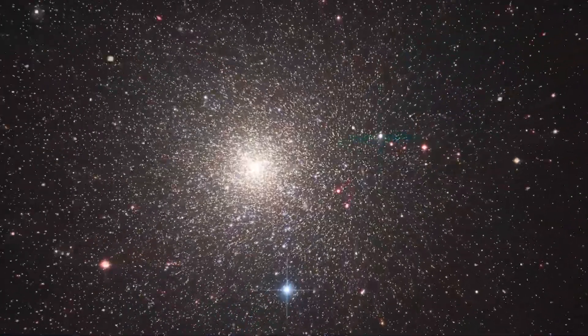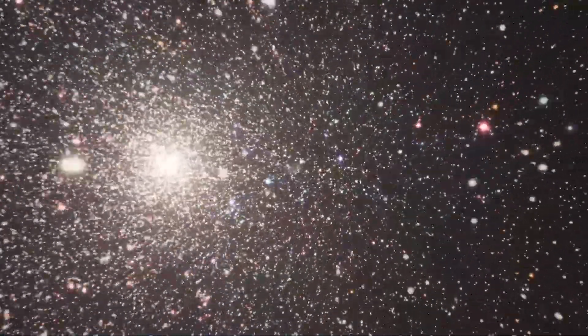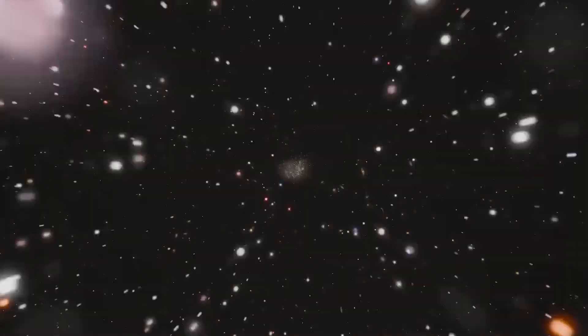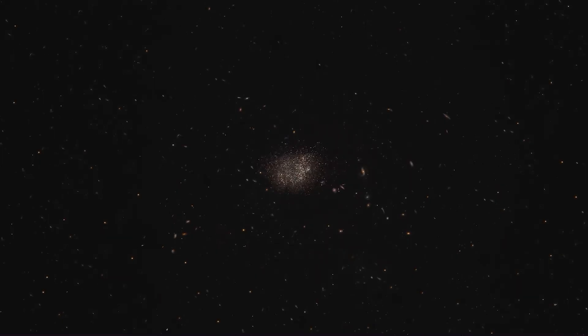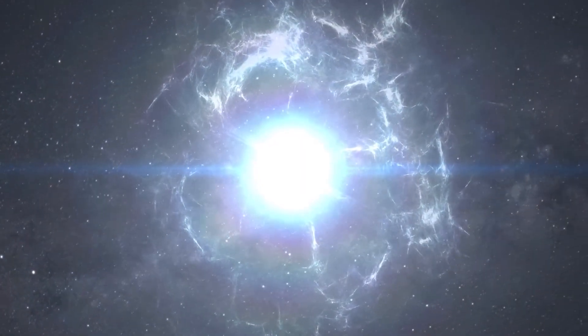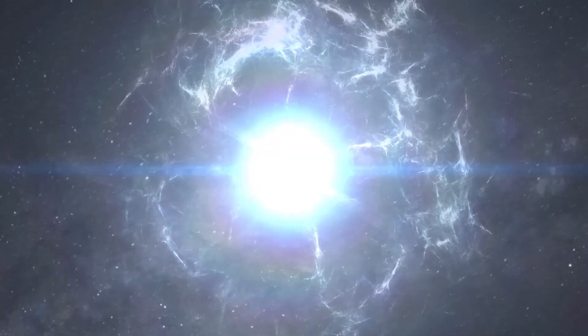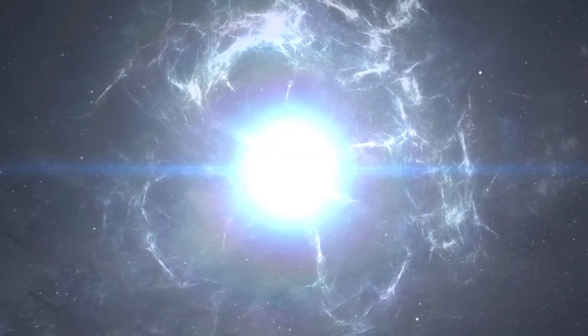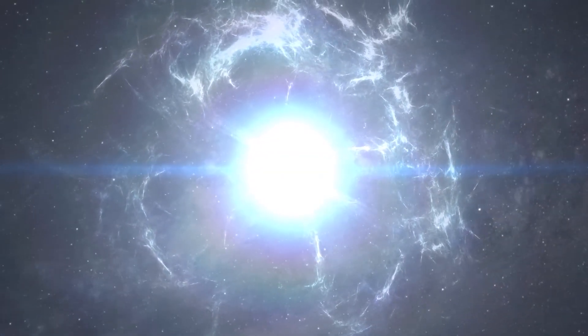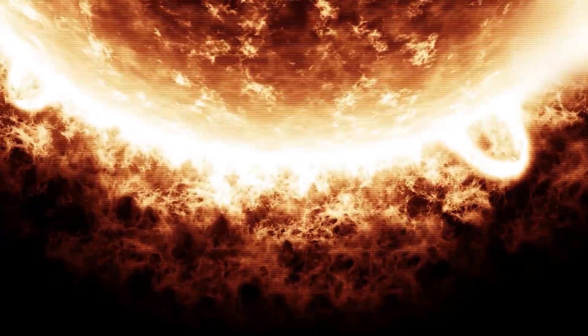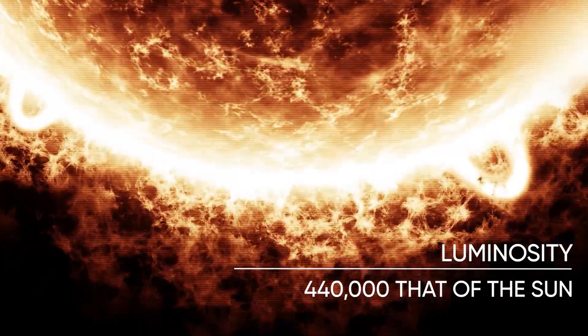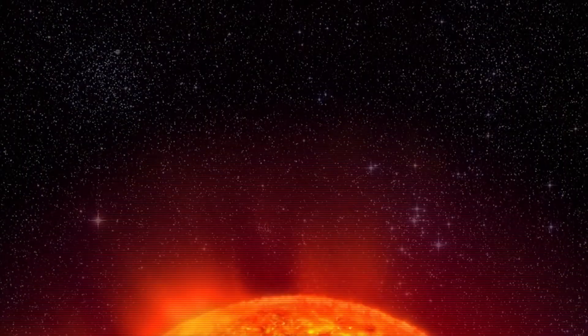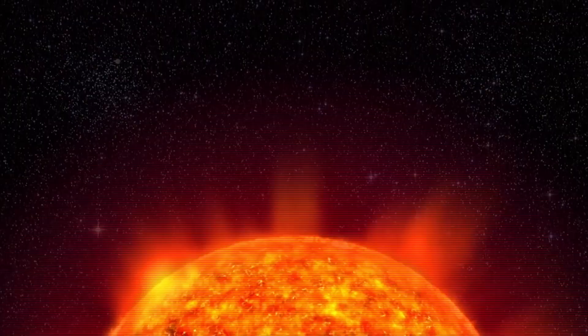Across the cosmic expanse, there are stars, and then there are stars. Stevenson 2-18 is decidedly of the latter variety. Its classification as a potentially luminous blue variable or a Wolf-Rayette star is not merely a label, but a testament to its tumultuous existence. These categories of stars are in especially volatile phases of their lifetimes. They are behemoths that undergo dramatic changes, shedding significant amounts of their mass and powerful stellar winds.